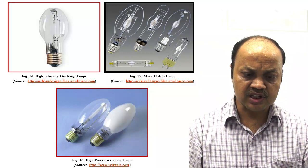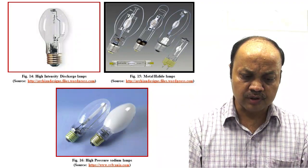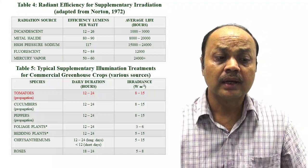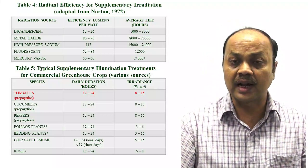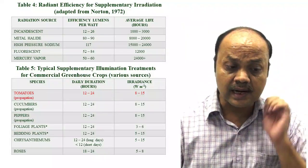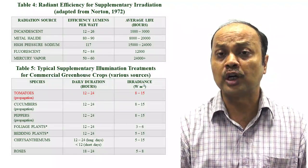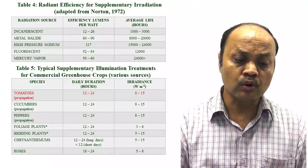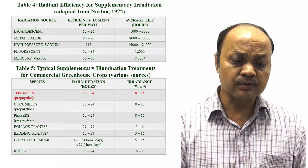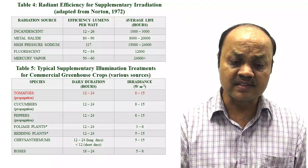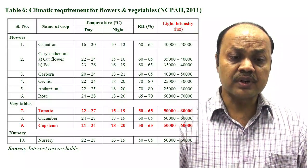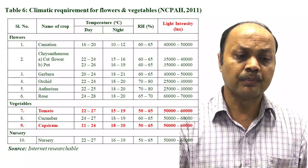In table four you can see that depending on the light source, its efficiency and average life are different. For artificial illumination requirements, in the case of tomato, if you are using supplemental lighting the daily duration is between 12 to 24 hours and the required irradiance is also given. In table six, general climatic conditions are given — day and night conditions, relative humidity, and light intensity.